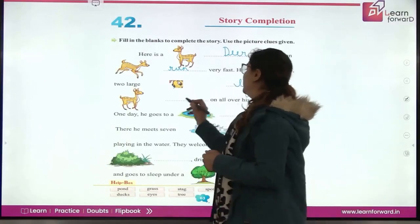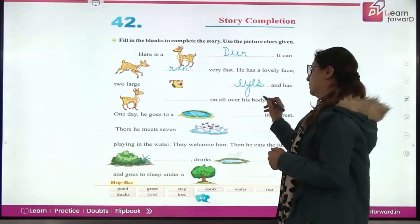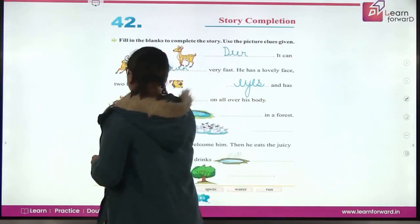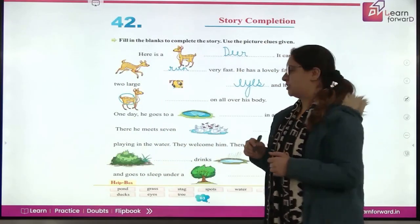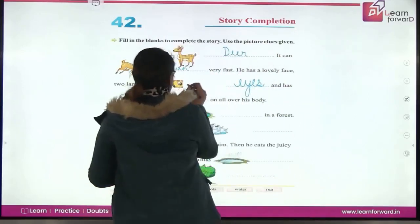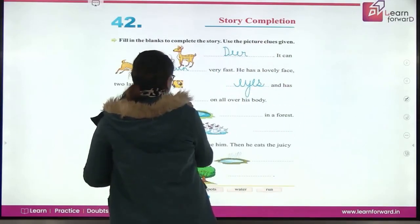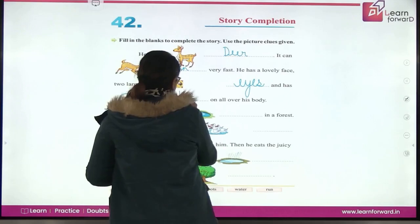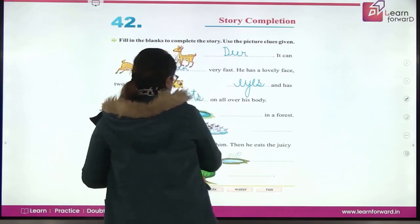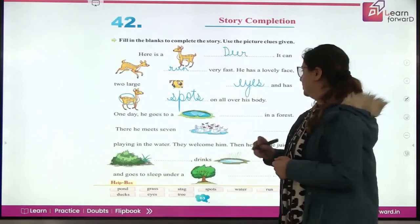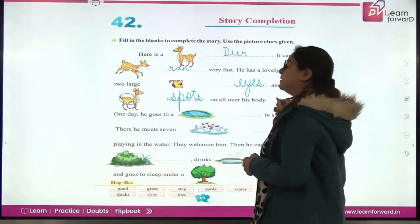And has dash on all over his body. And what does it have on its body? Look at this. Spots. What do we call it? Spots. Very good. What is the spelling of spots? S, P-O-T-S. Spots. Very good, on all over his body.